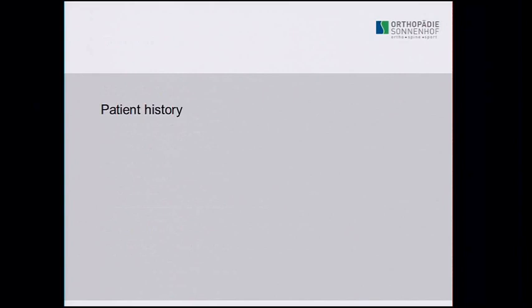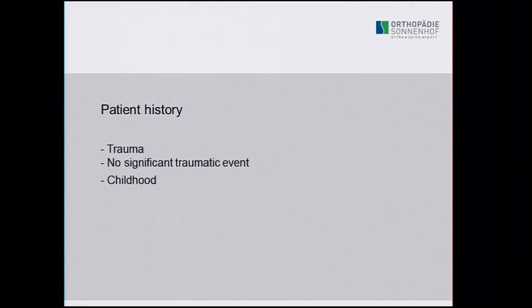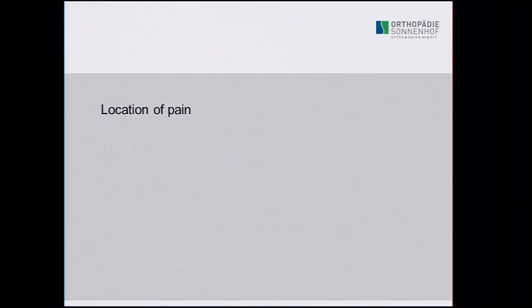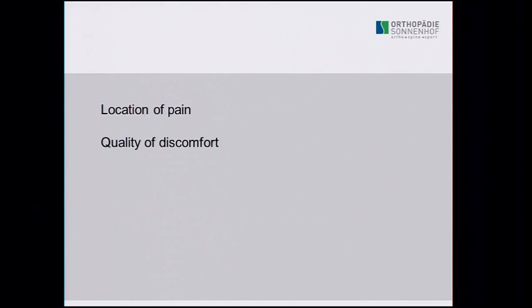The first step is the patient history. We have to know if there was trauma or no trauma, anything in childhood like late onset of walking, a diagnosis of dysplasia, what level of sports they are doing, and the location of pain. When you ask the patient where their hip is, you will be surprised how often they claim it is in the trochanteric region or up in the pelvis. You also need to know the quality of discomfort — is it stabbing, blocking, constant, or only with certain movements?